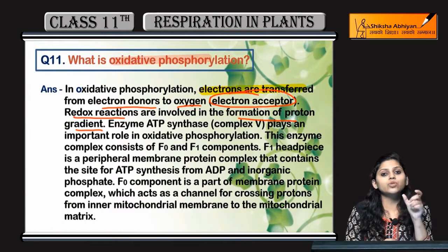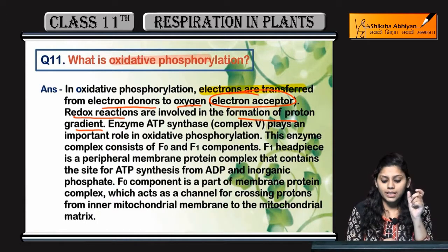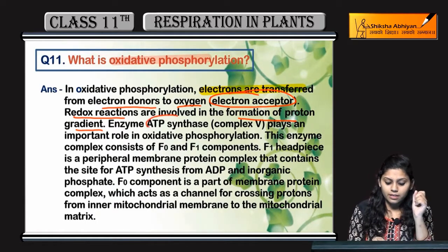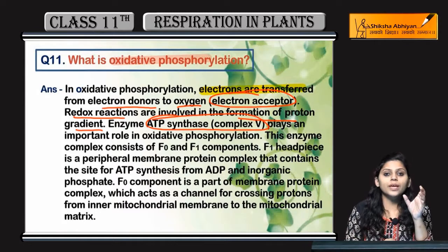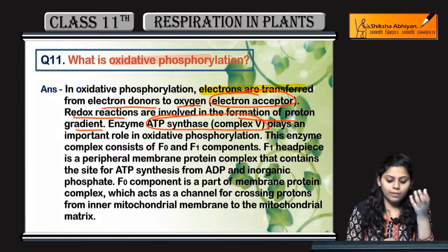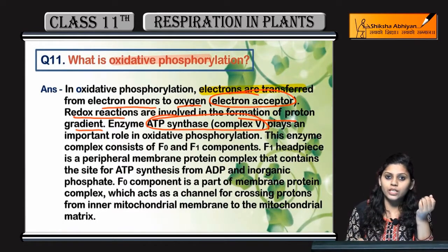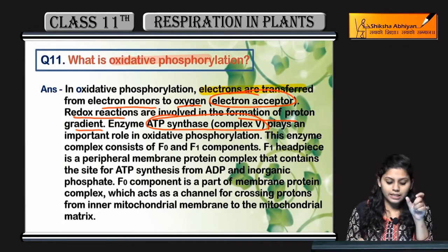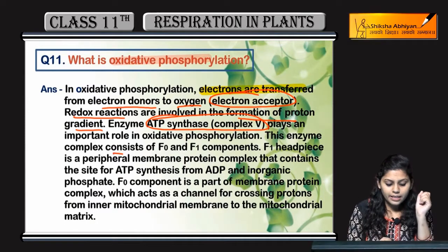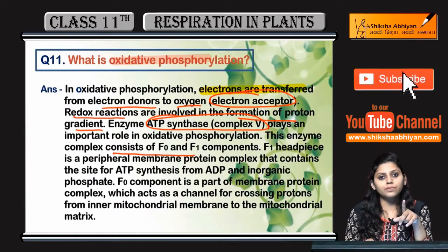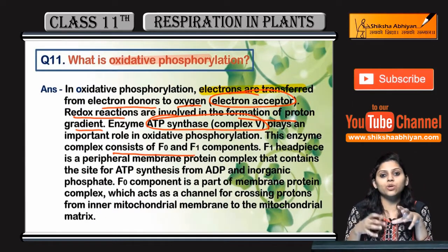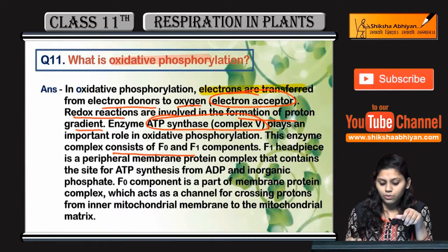The enzyme ATP Synthase, also known as Complex 5, plays an important role in Oxidative Phosphorylation. ATP Synthase consists of two components: F0 and F1, which include a headpiece and peripheral protein.